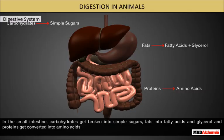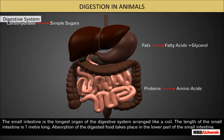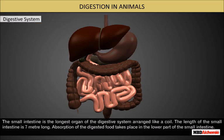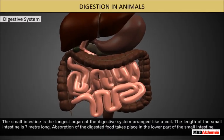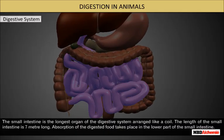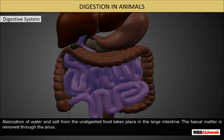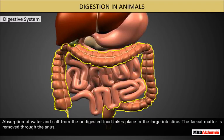The small intestine is the longest organ of the digestive system, arranged like a coil, and is seven meters long. Absorption of the digested food takes place in the lower part of the small intestine. Absorption of water and salt from the undigested food takes place in the large intestine. The fecal matter is removed through the anus.